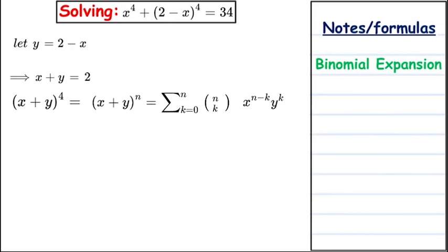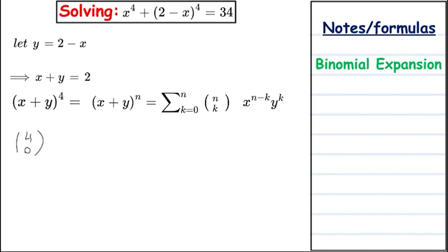Now we're going to expand (x plus y) all to the power of 4 using the binomial expansion. Starting with the binomial expansion formula, the first combination has n equal to 4 and k equal to 0, giving us 4C0 times x to the power of 4 times y to the power of 0.